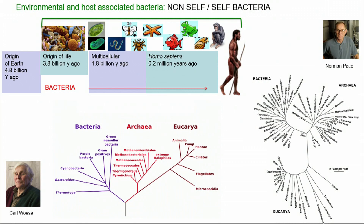Interestingly, all animals and plants have their own self bacterial microbiota in a way that recapitulates the whole tree of life. An animal is not only itself, its species, but it also contains bacteria, archaea, fungi, and ciliates — recapitulating the whole tree of life.